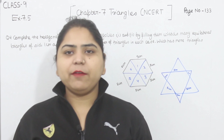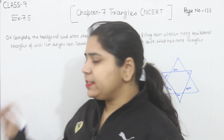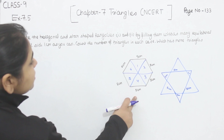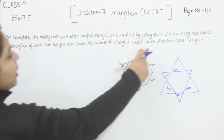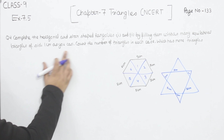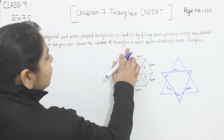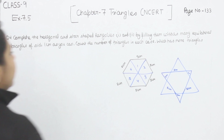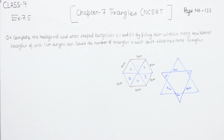Hello everyone, this is Preeti. We are here with another question of exercise 7.5, page number 133, question number 4. Complete the hexagonal and the star-shaped rangolis by filling them with as many equilateral triangles of side one centimeter as you can. Count the number of triangles in each case — which has more triangles?